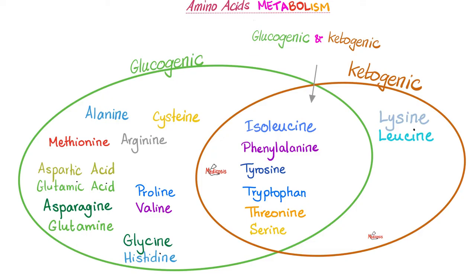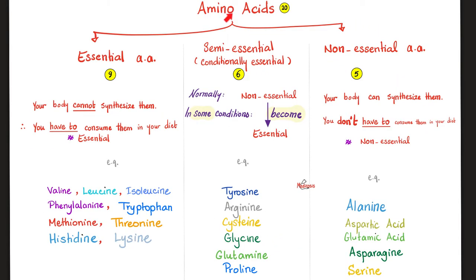Some amino acids can give you glucose through gluconeogenesis — we call them glucogenic amino acids. Others yield ketone bodies during fasting or starvation — these are ketogenic amino acids. Some amino acids can give you both glucose and ketone bodies. The 20 proteogenic amino acids can be classified into essential, semi-essential, and non-essential. Essential means your body cannot synthesize them, so it is essential that you eat them in your diet — these include nine amino acids.